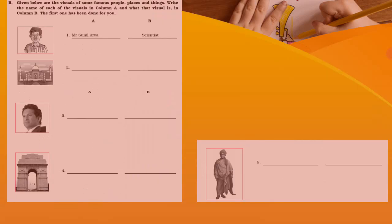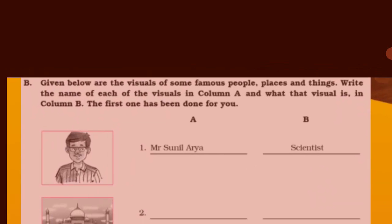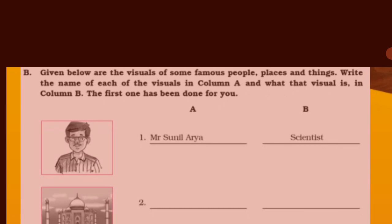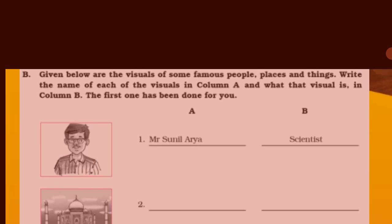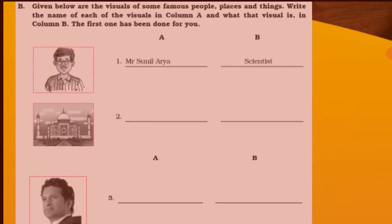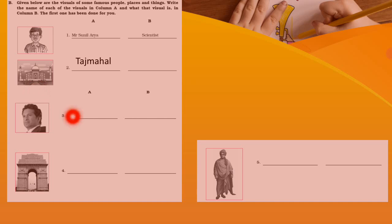Next worksheet: given below are visuals of some famous people, places, and things. Write the name of each person or visual in column A and what that visual represents in column B. The first one has been done for you. Mr. Sunil Arya — this is a proper noun, the name of a person — and he is a scientist, which is a common noun. This is the Taj Mahal, and Taj Mahal is a building, which is a common noun.